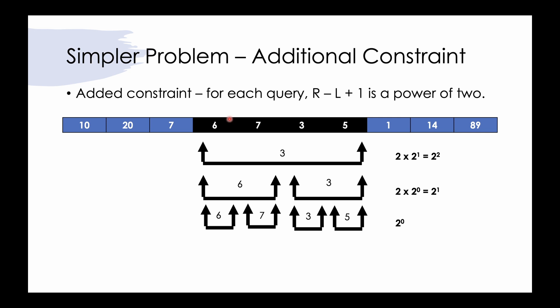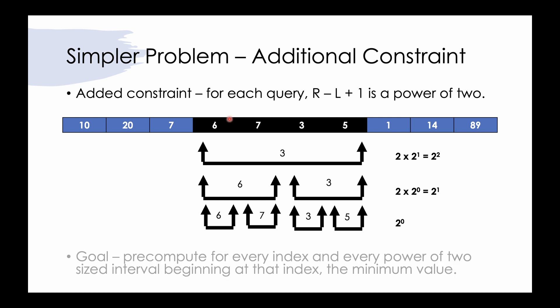So for each index, if we could precompute for every power-of-2 size interval beginning at that index the minimum value, then we could quite easily solve this problem. We can do that because firstly, each good interval can be broken down into smaller good intervals, and secondly, for any given index there are at most log n good intervals beginning at that index.